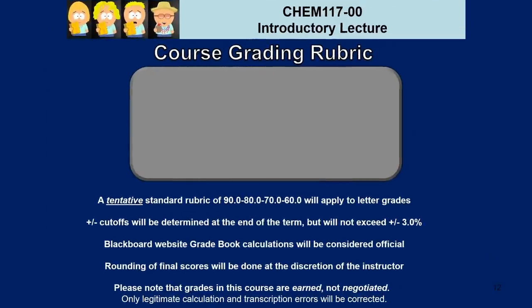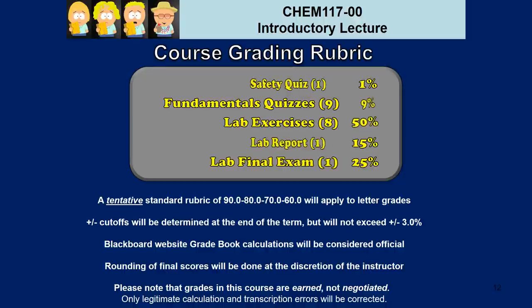How are you going to be evaluated in this course? Every assignment — be it a quiz, a report, a worksheet, or an exam — will be graded on a scale of 100 points, and that score will be entered into a weighted average to determine your final course score. Your safety quiz and fundamentals quizzes are each worth 1% of your final grade. You'll also have eight lab exercises, each counting for 6.25% of your final grade, meaning those eight lab exercises in total count for 50% of your final grade.